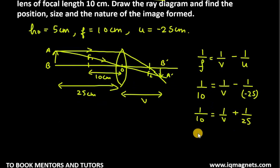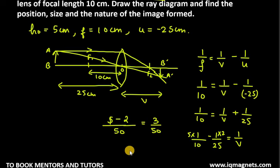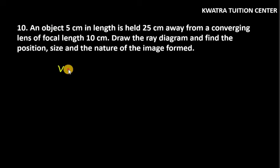1 over 25 you can take to left hand side and it will be minus. Cut the first term now, you get 1 only 3 and then 5 minus 2 over 50. 3 over 50, so 1 over V equals 3 over 50. You get V as 50 over 3, and it is 16.7 cm.